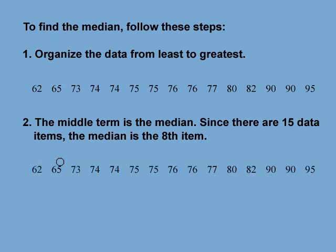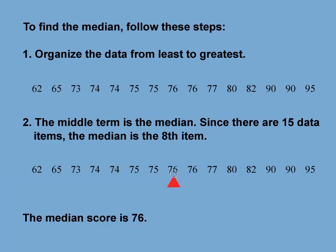Counting to the eighth term: 1, 2, 3, 4, 5, 6, 7, 8. This term, 76, is the median.